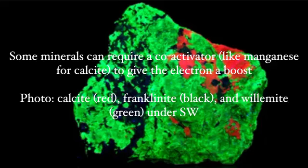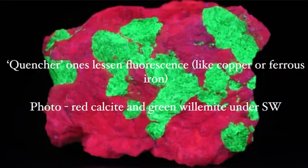This photo shows calcite in red, franklinite as the dark black, and willamite as the bright apple green — this is under shortwave. Quencher activators are not really activators; they actually do the opposite — they lessen fluorescence. A major thing that does this is copper.